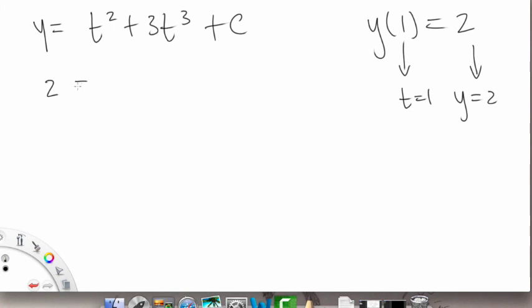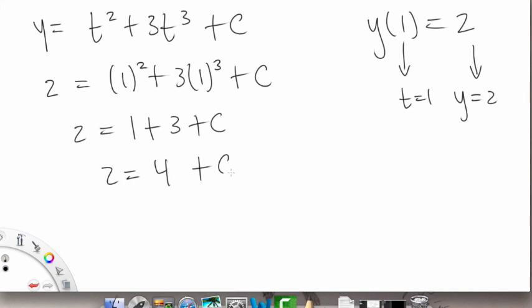We're going to plug those in and solve for C. So if 2 is plugged in for y and we have 1 here plus 3 times 1 cubed plus C, then that's going to give us 2 equals 1 plus 3 plus C. So then 2 equals 4 plus C, so that means that C equals negative 2. Now that we found C we can plug it back into our general solution to make it specific.